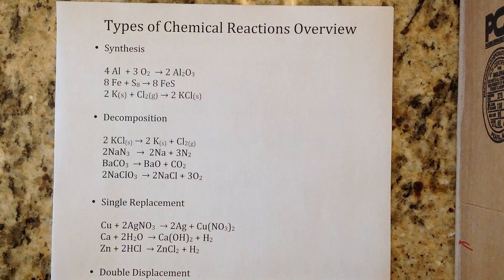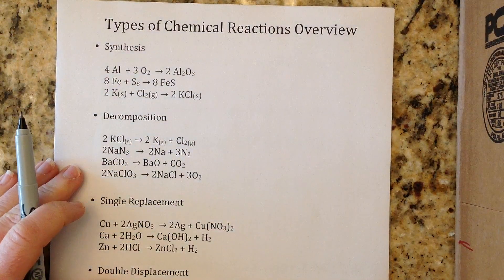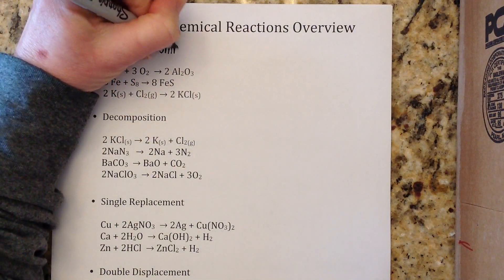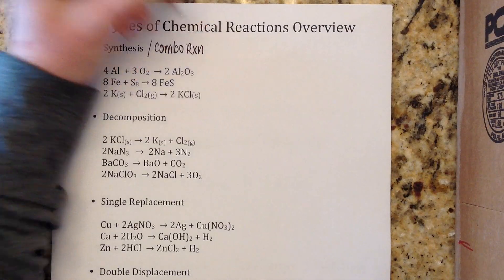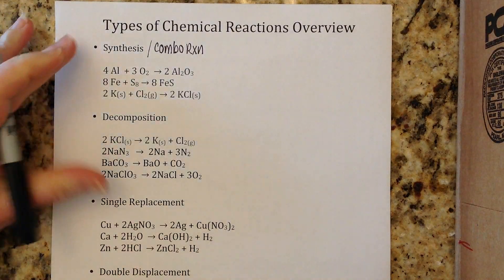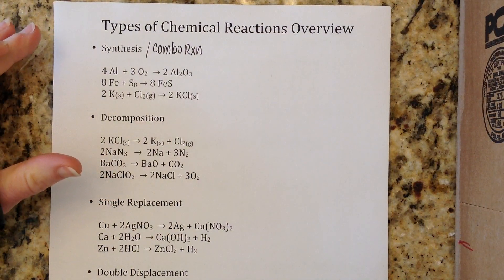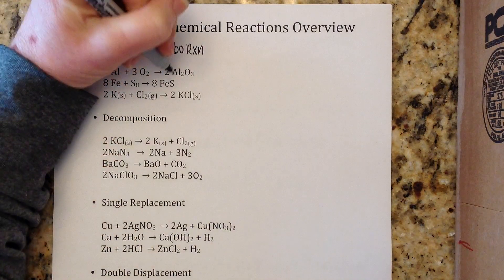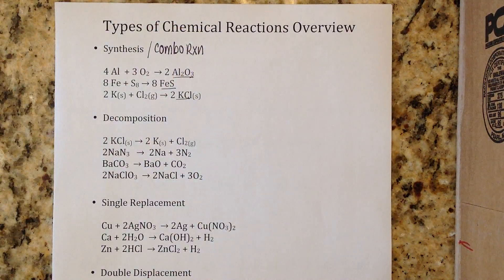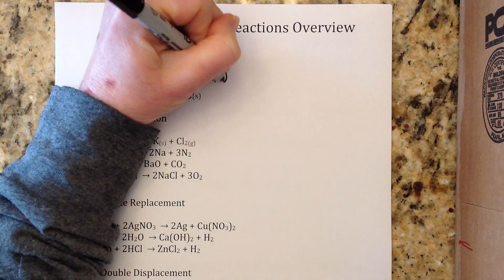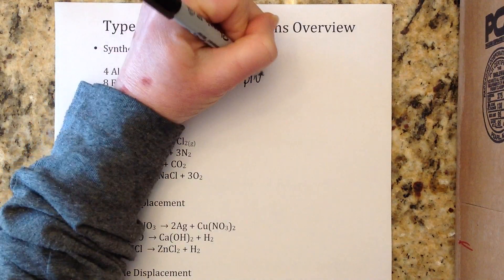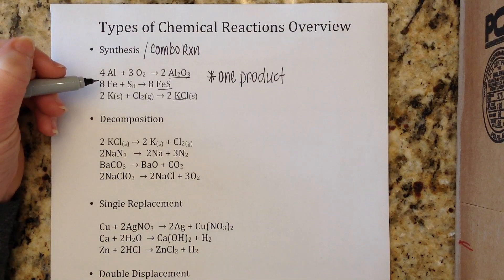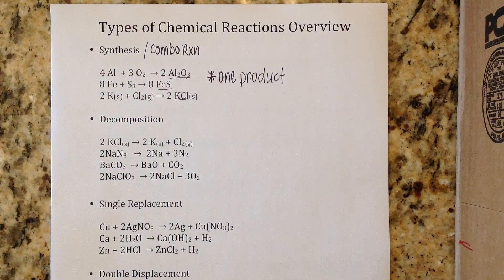The first type are synthesis reactions, sometimes called combination reactions. It depends on who's teaching you - it's the same thing. When I think of synthesis I think synthesize, making something. Your big clue that you have a synthesis reaction is that you only have one product. This is the only type of reaction where you will have one product. You could have two, three, four, whatever reactants on this side but it's always one product.